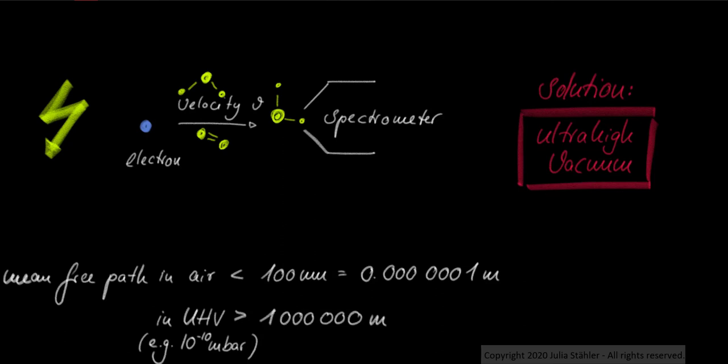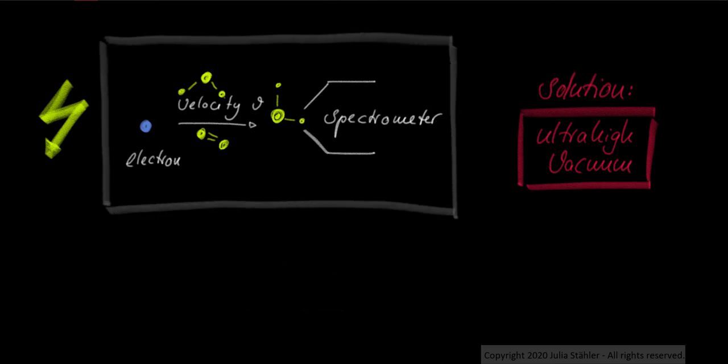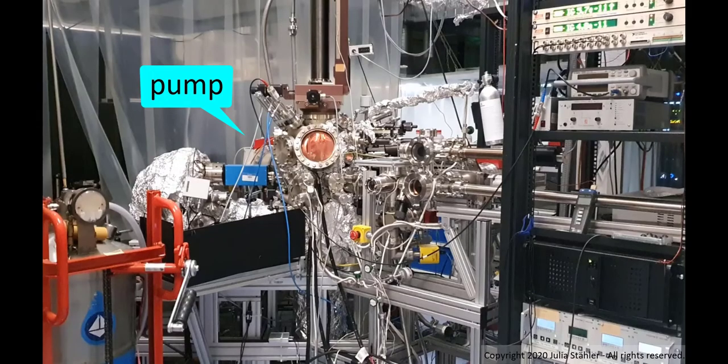To do so, we must surround our experiment with an ultra-high vacuum, or UHV chamber, that is able to withstand the large pressure difference compared to ambient pressure. And then, we use a vacuum pump to get rid of the air inside.